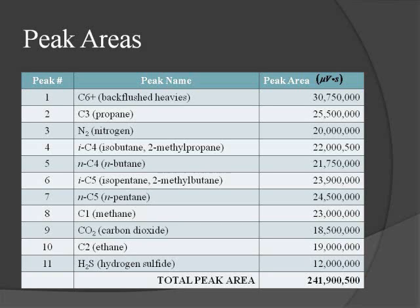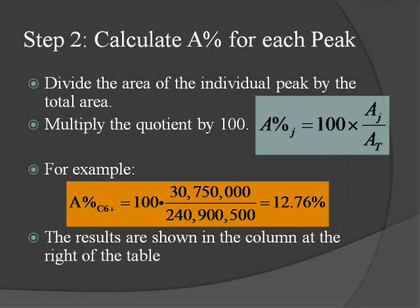This table presents the results of the first step of our area percent calculation, that is, the summing of all of the areas of all of the peaks in the chromatogram. You'll notice that we have a total area in the chromatogram of 241,900,500 microvolt seconds, which is the typical unit of area for chromatographic calculations.